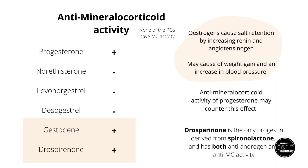For mineralocorticoid activity, none of the progestins have mineralocorticoid activity. Progesterone actually has anti-mineralocorticoid activity. In contrast, most progestins don't have anti-mineralocorticoid activity, with the notable exceptions of gestodene and drospirenone. Drospirenone was specifically derived from spironolactone, which is itself a potent anti-mineralocorticoid. This is of significance when given with an estrogen, because estrogens cause salt and water retention — an action naturally opposed by the anti-mineralocorticoid action of progesterone.